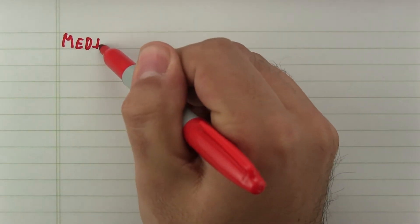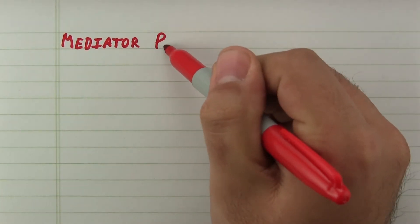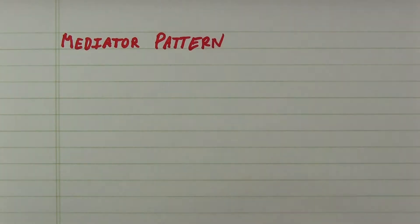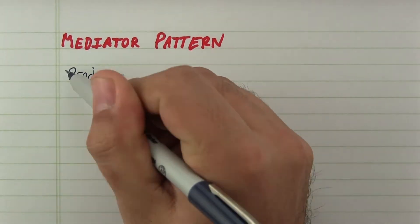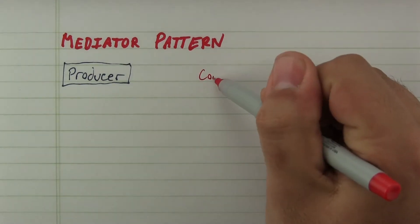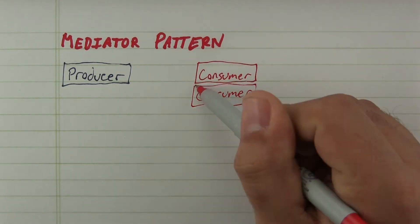The mediator pattern is one of the basic object-oriented design patterns. At its core, it is designed to decouple a producer from a consumer.